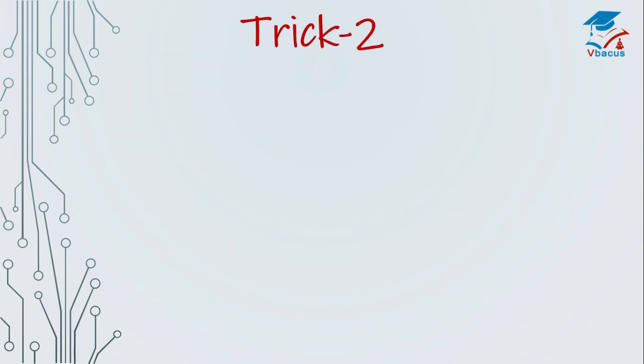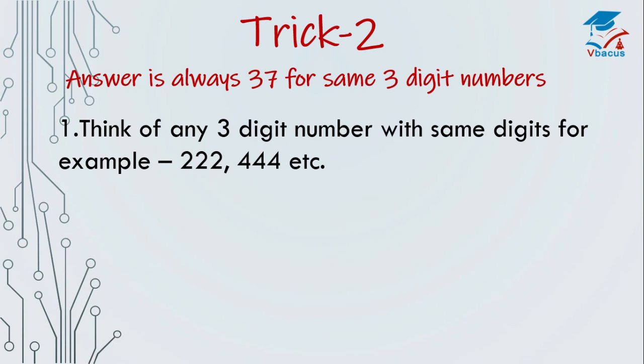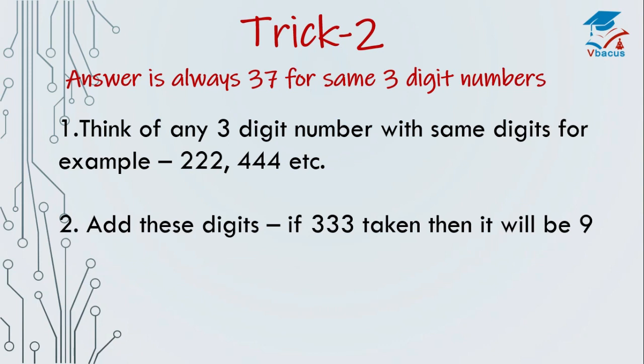Trick 2. Answer is always 37 for same 3-digit numbers. This is the beauty of numbers. Think of any 3-digit number with same digits. For example, 222, 444 or any other number also you can take 555. Add these digits if 333 taken, then it will be 9. Now divide 333 by 9 you will get 37. Suppose I take 222. 222 should be divided by 6 and again you will get 37.